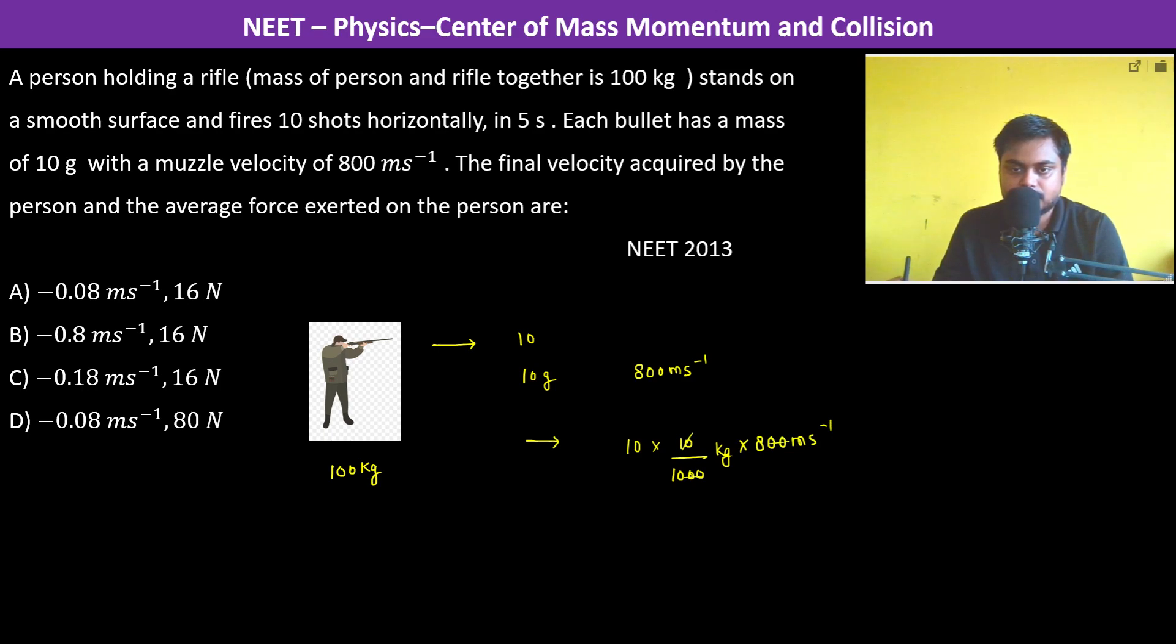Which is 80 kg meter per second. The final velocity acquired by the person - since momentum has to be conserved, initial momentum should be equal to the final momentum. Initially all are at rest.